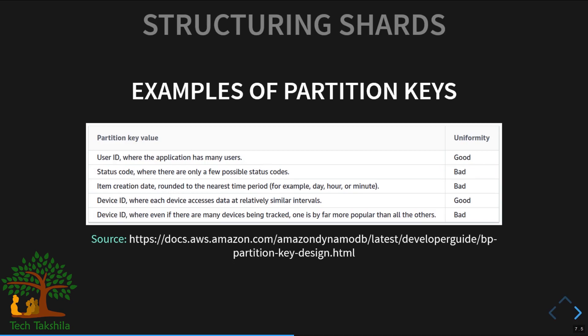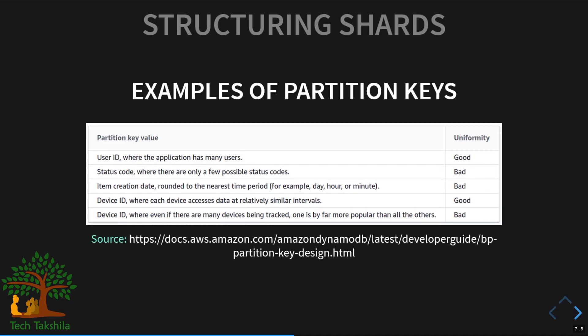Let's look at good and bad examples of partition keys using an AWS DynamoDB slide. DynamoDB is Amazon's NoSQL database for key-value and document data. A user ID is a good partition key because it uniquely locates a record across partitions and avoids cross-partition and hot-partition problems. A status code as a partition key would be bad — it causes hot partitions by repeatedly hitting the same partition for records with a particular status code.